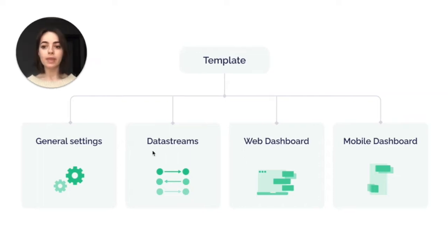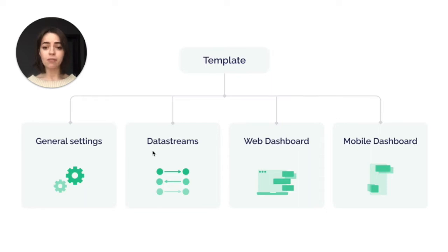Data streams define which data and in which format will be sent to and from your device. For example, if you are using a temperature sensor, the temperature data will be stored in a data stream. Once created, data streams are used in widgets on mobile and on web.